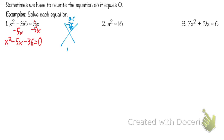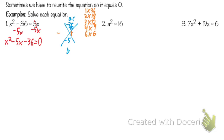We need a negative and a positive to get a negative on top, and factors of 36 that have a difference of 5. Let's write them off to the side: 1×36, 2×18, 3×12, 4×9, 6×6. Do any of those work for being 5 apart? 4 and 9. Which one's negative? The 9, because it's the bigger number and it ends up being negative.